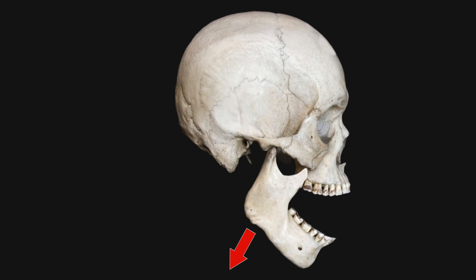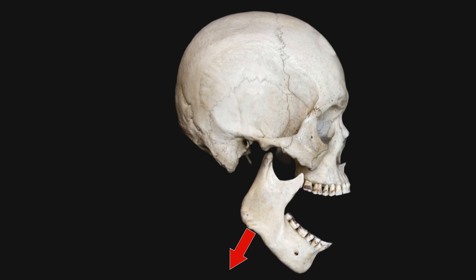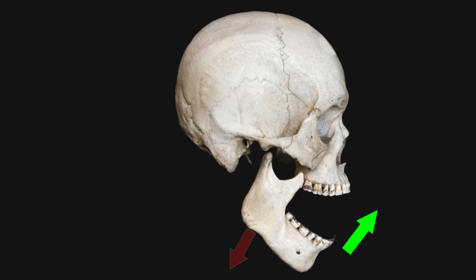Overall, the goal is to move the jaw downwards and back. Once the jaw has been pushed downwards, the chin is lifted upwards to complete the reduction.